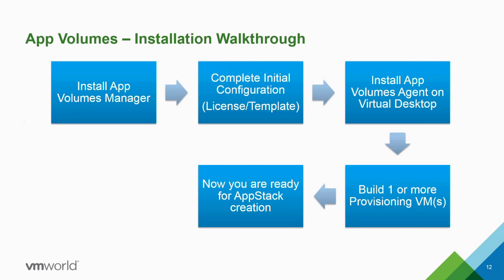The install process is quick — you can get App Volumes up and running and provision your first App Stack within about an hour in a lab. You install the App Volumes Manager, go through initial configuration, set up licensing, and configure where templates are written. Templates are used to create Writable Volumes and App Stacks. The standard template is 20 GB; we typically want to size it closer to the actual application footprint to avoid wasting disk space. After building your provisioning VMs, you're ready to create App Stacks.